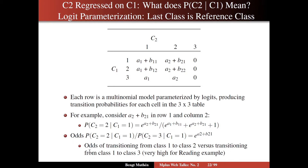So that's the odds of transitioning from class one to class two divided by transitioning from class one to class three. That's how you think about these probabilities — they're talking about a transition between two different C2 classes. That odds of transitioning from class one to class two versus class three is going to be very high for the reading example — that is, it's very unlikely to transition to class two.